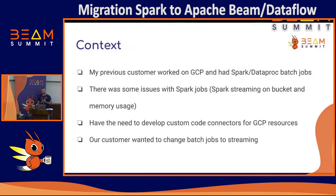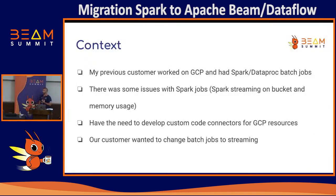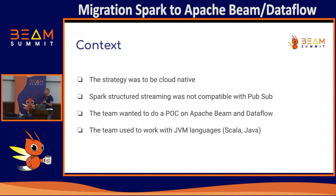A few words about the context: my previous customer worked on GCP and had many Spark Dataproc batch jobs. There were some issues with Spark jobs — bad design like Spark Streaming on bucket, memory usage problems. We also had the need to develop custom connectors, for example to write data to Spanner with Spark Scala. At that time, the customer wanted to change batch jobs to streaming jobs, and the strategy was to be cloud native.